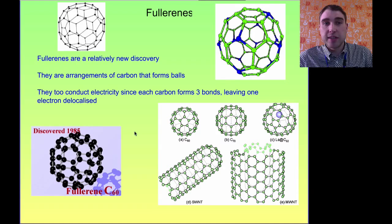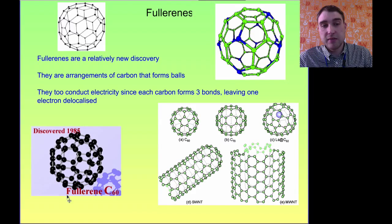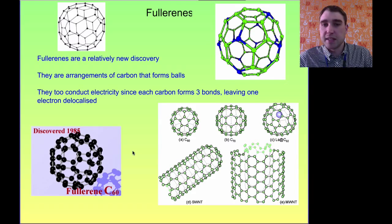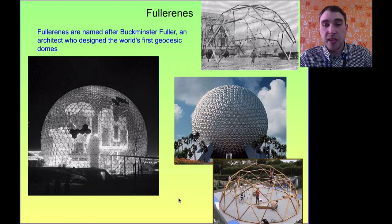Fullerenes are a fairly recently discovered form — they're balls of carbon with particular features. C60 is an example with 60 carbon atoms. If you count the bonds each carbon is forming, you'll see it's three again, so they have spare electrons and can conduct electricity. Fullerenes are named after the architect Buckminster Fuller, who designed buildings that look like the fullerene structure.